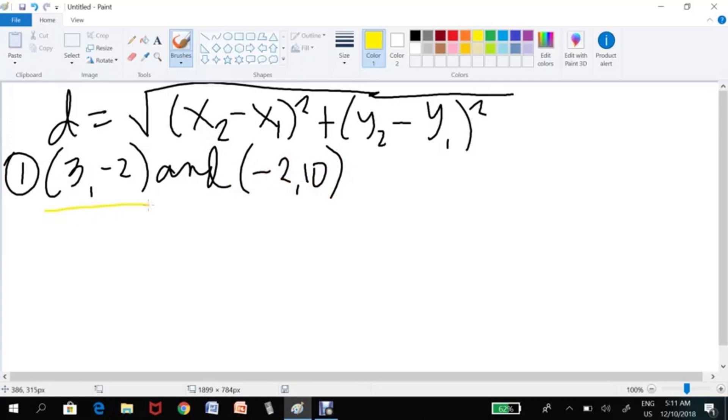So, (3, -2) we consider this as our first point. (-2, 10) we consider this as our second point. The 3 we will consider as x₁, and this will be x₂. The -2 we consider as our y₁, and 10 would be our y₂.